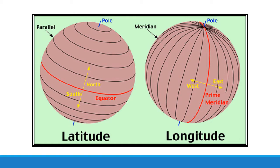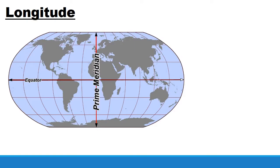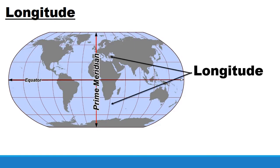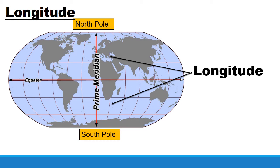Let's move on to longitudes. See this image — you can see these vertical lines which go up and down, from the north to the south pole. These lines are called longitudes. Longitude is a measurement east or west of the prime meridian. First we'll understand what is longitude, then we will discuss the concept of prime meridian.